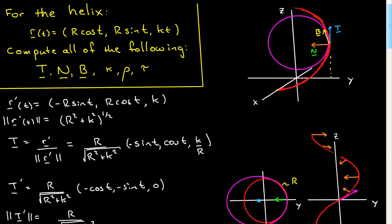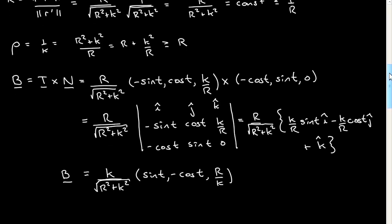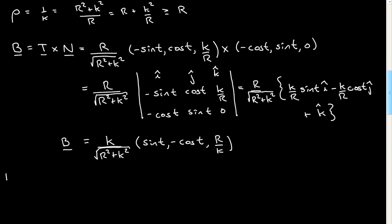Let me go on then. The final thing to compute is the torsion. We have most of what we need. Torsion τ is defined to be -N·B', the derivative of B with respect to the parameterization, divided by ||r'||, the magnitude of r'. So what we need is B'. Let's work it out over here.